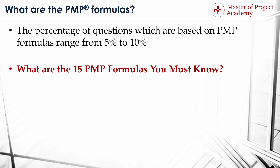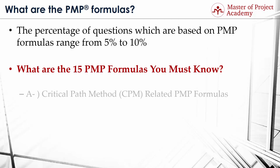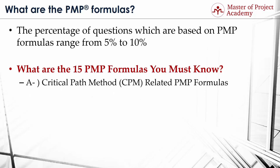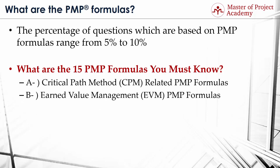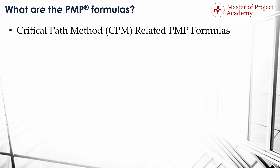We can categorize the PMP formulas under two headings: A) Critical Path Method or CPM-related PMP formulas, and B) Earned Value Management or EVM PMP formulas. Let's go over them one by one and learn the details of each PMP formula — starting with Critical Path Method or CPM-related PMP formulas.